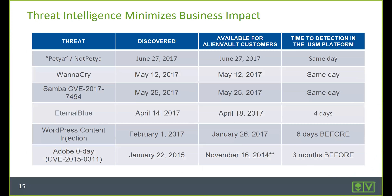Threat intelligence minimizes business impact. You can see a number of ransomware attacks detected over the last 12 months. The Petya threat was discovered on June 27th and we had it detected on the same day. WannaCry — detected on the same day. Samba ransomware — detected the same way. EternalBlue — four days. WordPress content injection — we had the exploit detected six days before the attack took place. The Adobe Zero Day — three months before the attack took place.